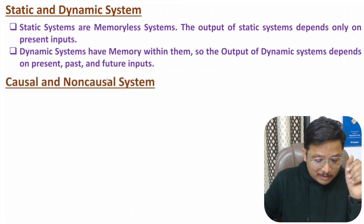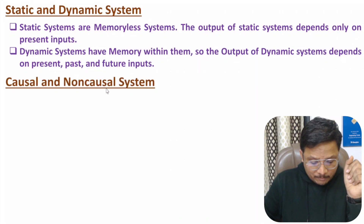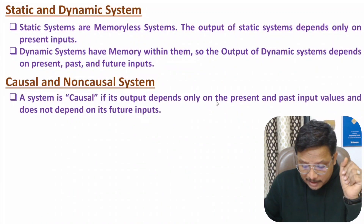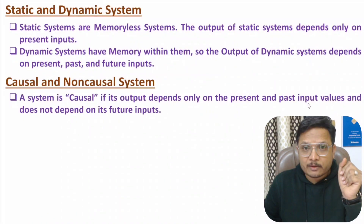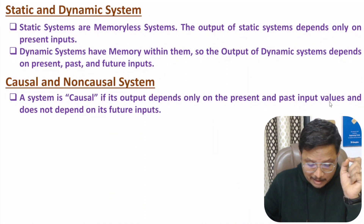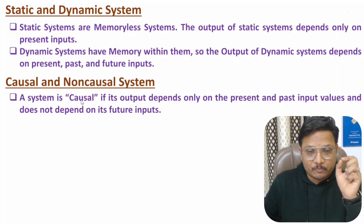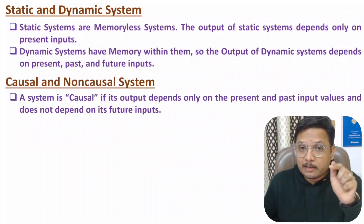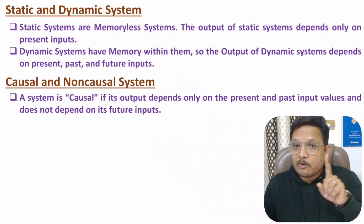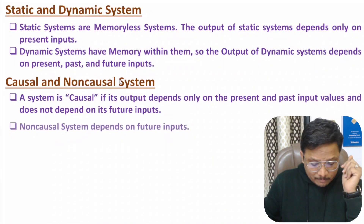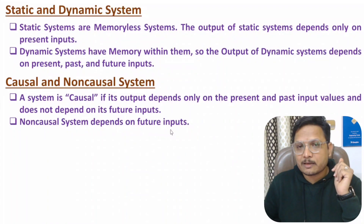Now I will discuss classification as per causal and non-causal systems. A system is causal if its output depends only on present and past input values, and is not depending on future inputs. For a causal system, output depends on present and past inputs only. A non-causal system is one that depends on future inputs.